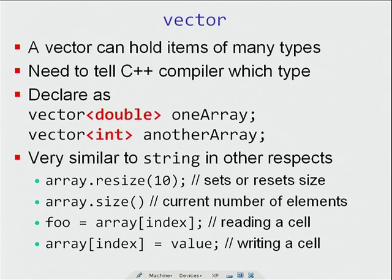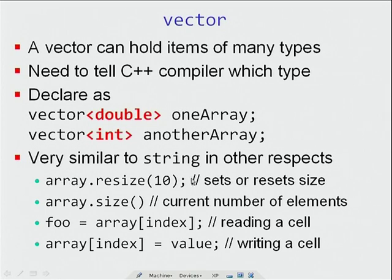You can resize an array to have a given number of elements. If the original array was smaller than 10, after calling resize(10), the array will be of size 10 — the last five elements will be garbage, the first five will be preserved. If you resize to a smaller size, you retain only the first elements and discard the rest. You can also query the current size of the array at any time.